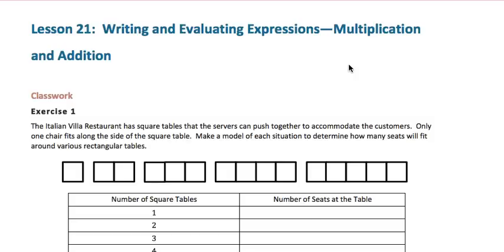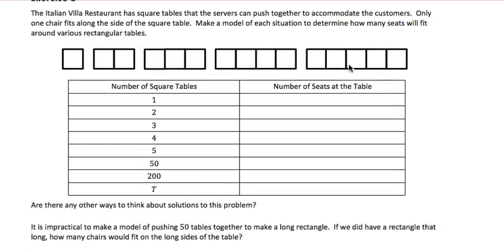In Module 4, Lesson 21, we're going to practice writing and evaluating expressions in which we have multiplication and addition together. So in Exercise 1, the Italian Villa Restaurant has square tables the servers can push together to accommodate the customers. Only one chair fits along the side of the square table. We make a model of each situation to determine how many seats will fit around various rectangular tables.